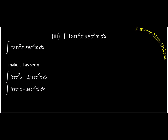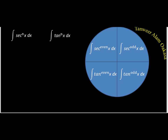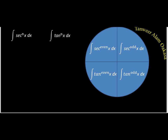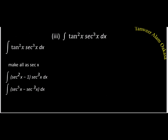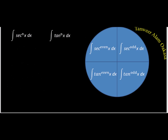Let's now look at the integral powers of only tan or only sec separately. I categorize into four parts: sec to power even, tan to power even, tan to power odd, and sec to power odd. The first three are the easiest. Sec to power odd is the difficult case, and I will handle it separately.